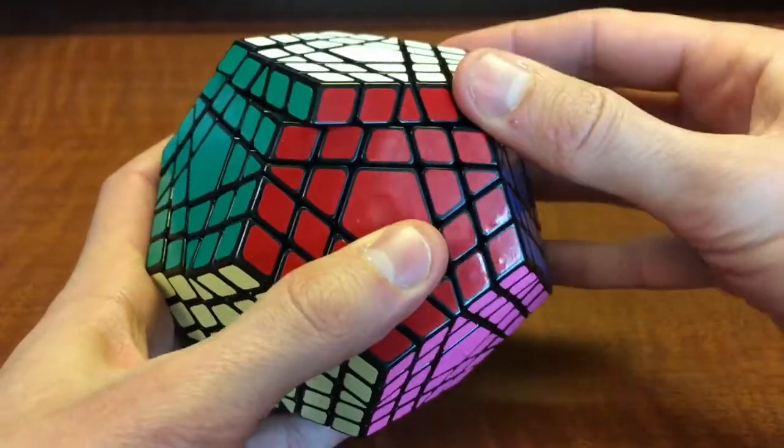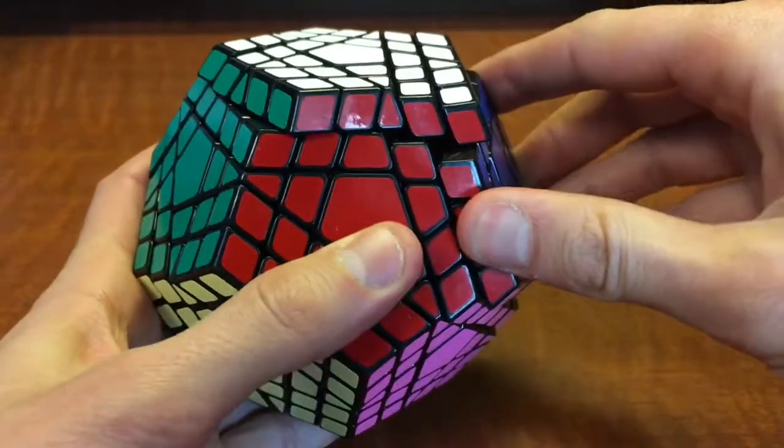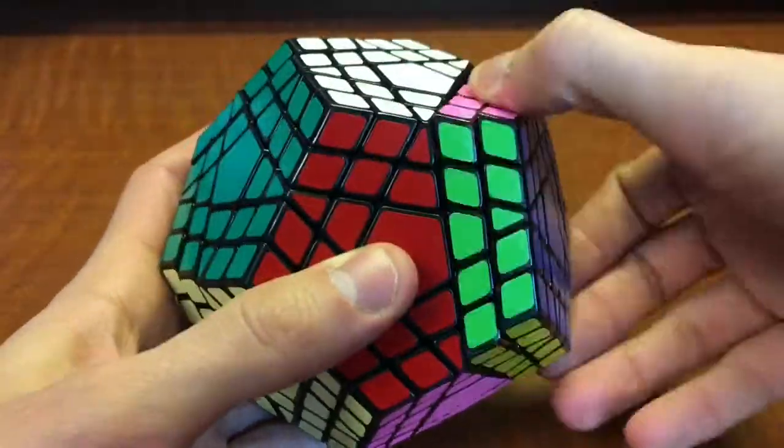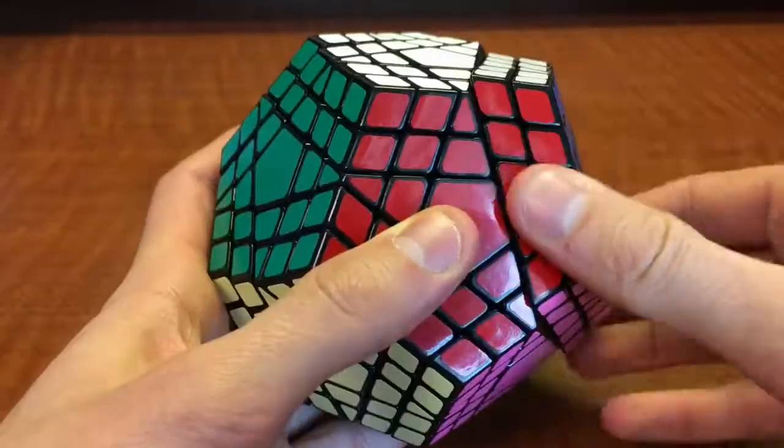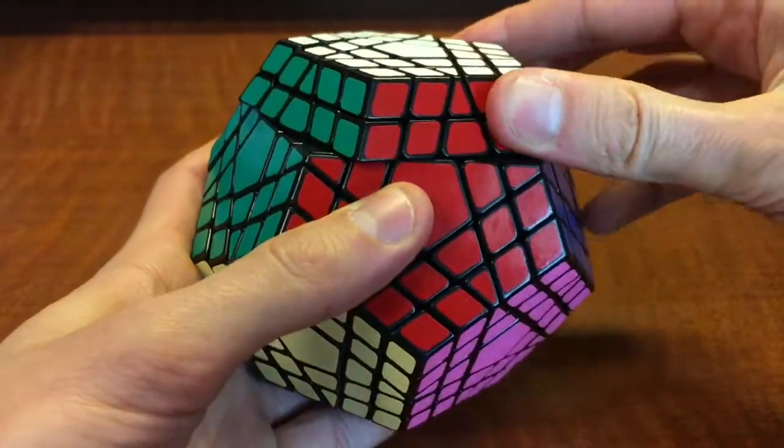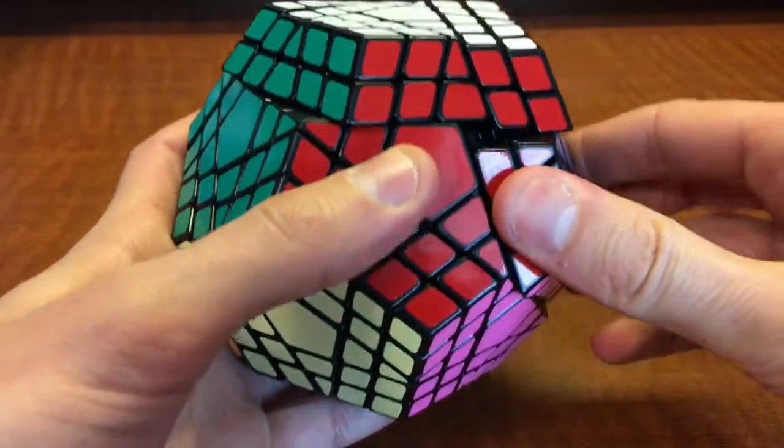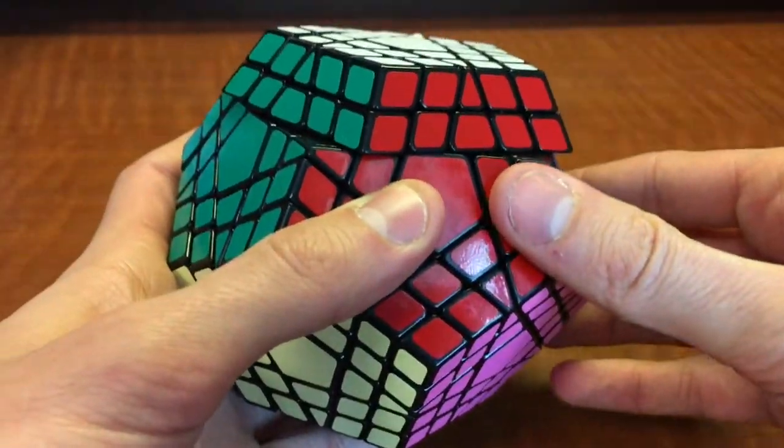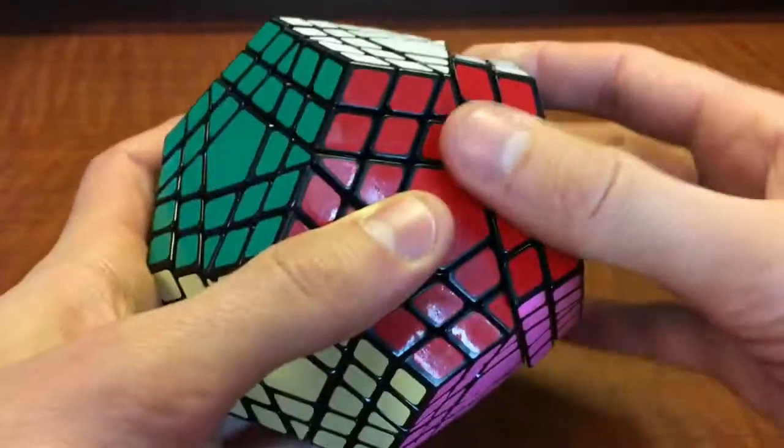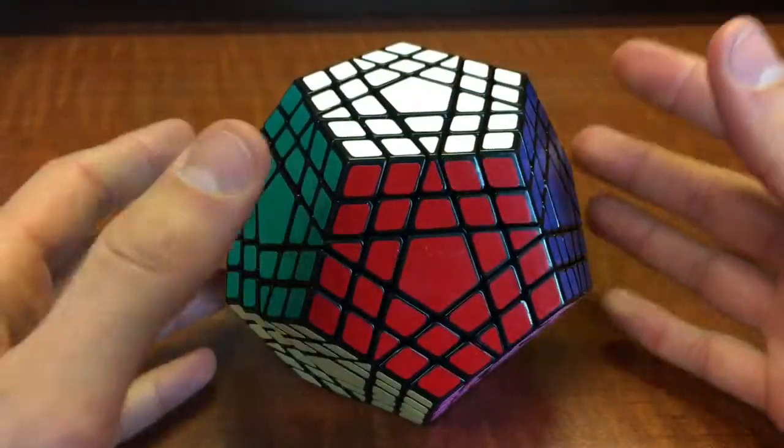You wouldn't expect a Gigaminx to corner cut, but it does. It corner cuts a little bit, not a lot. Very minimal, but just enough because you're not going to be speed solving this. But the one that is really impressive is the two layers. As you can see, I can actually cut about half a piece, which is really impressive on a puzzle of this size.